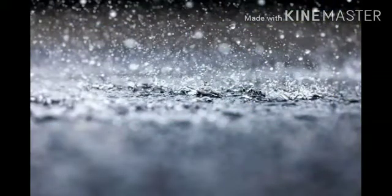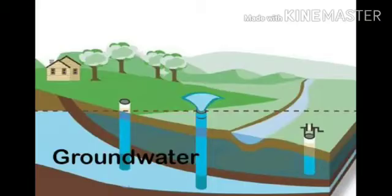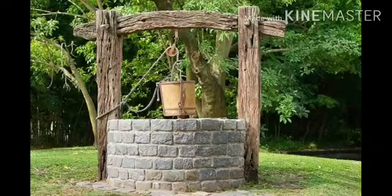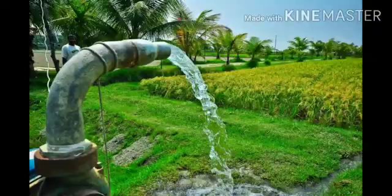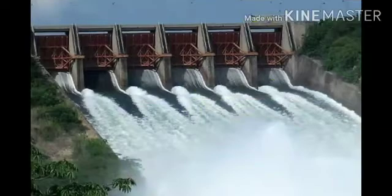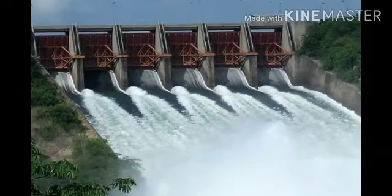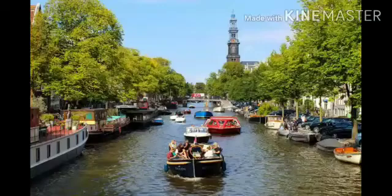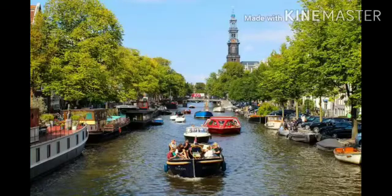Sometimes, rainwater seeps through the ground and gets collected underground. This water is called groundwater. We can reach this water by digging wells, using water pumps and hand pumps. We also have man-made sources like dams and canals for collecting and distributing water.